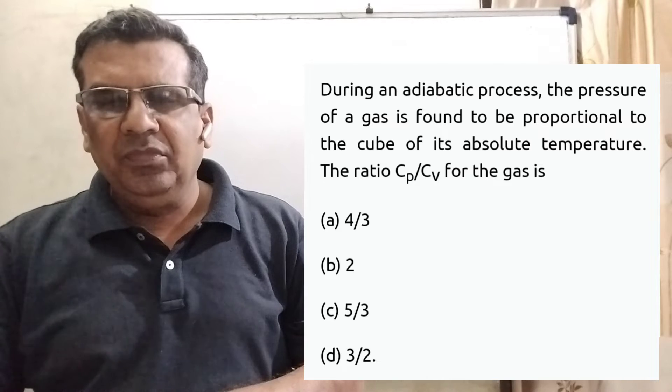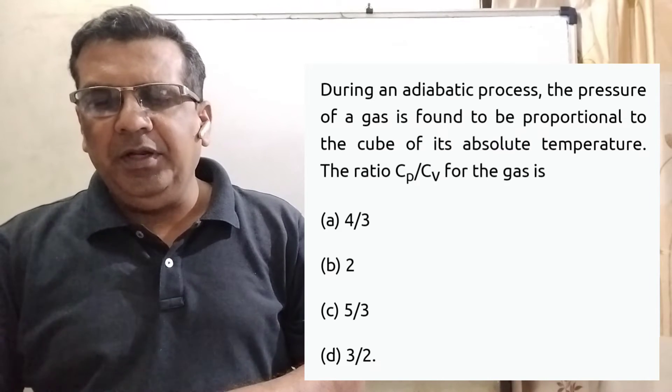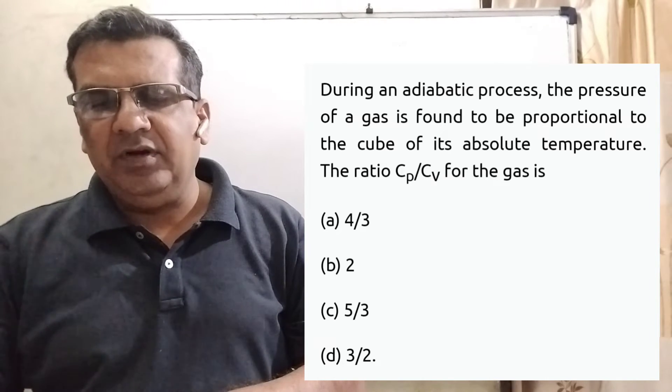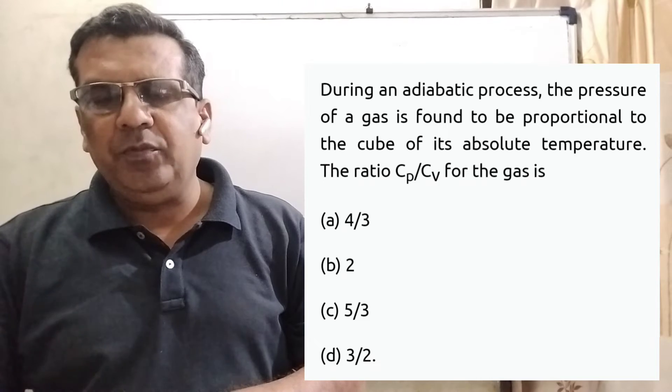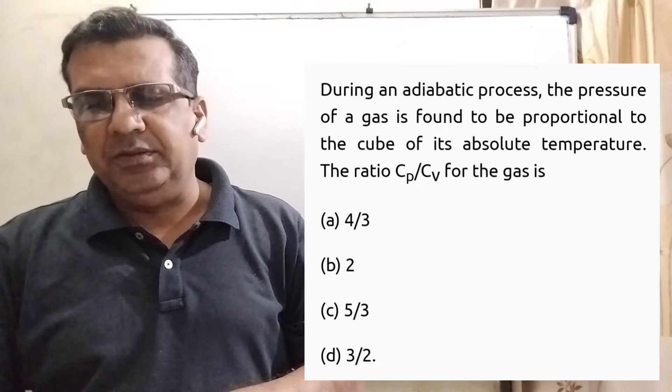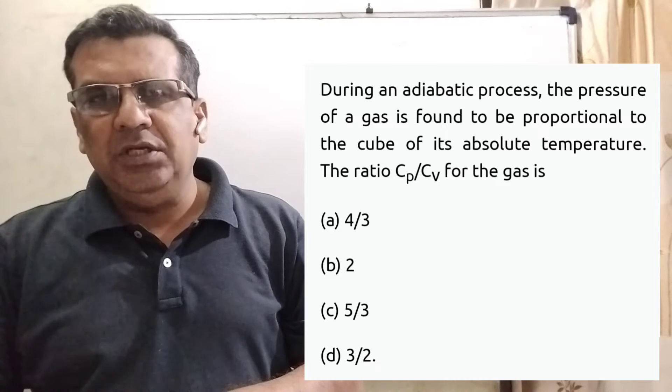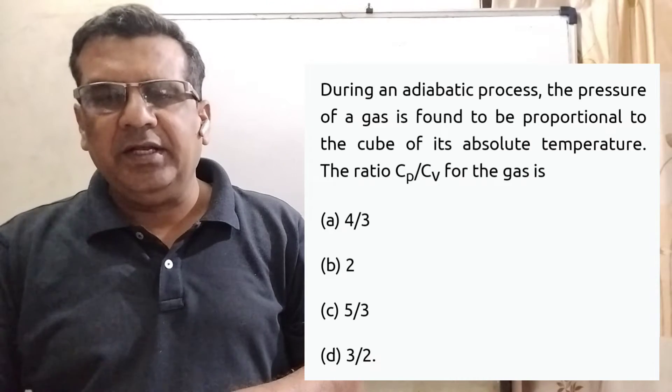Now here is the question. During an adiabatic process, the pressure of a gas is found to be proportional to the cube of its absolute temperature. The ratio Cp upon Cv for the gas is: